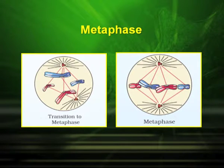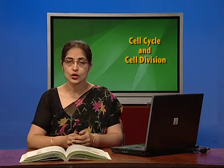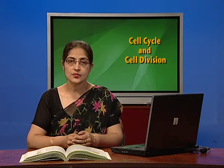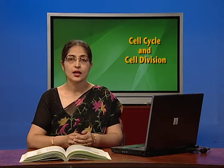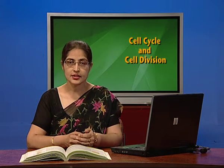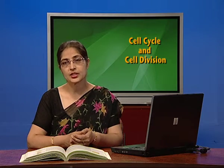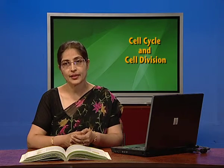Notice that in the transition phase, the centromeres have not yet reached the opposite poles completely. Also, the chromosomes are in a transient state and they are moving towards the equatorial plate.